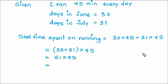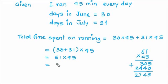That is equal to 61 multiplied by 45. Let's do it here. 61 multiplied by 45. 5 ones are 5. 5 6s are 30. While multiplying with 4, first give a 0. Then 4 ones are 4. 4 6s are 24. Add them. We get 5, 4, 7, 2. So, 2745 minutes.